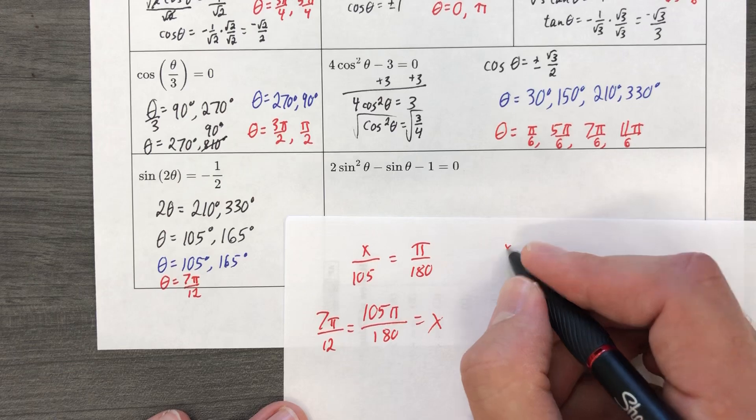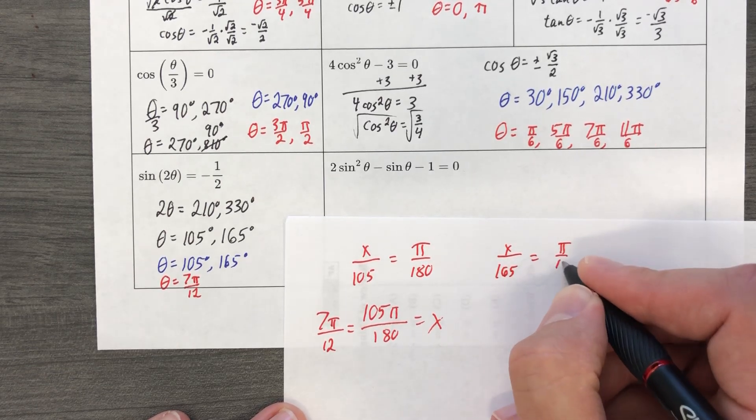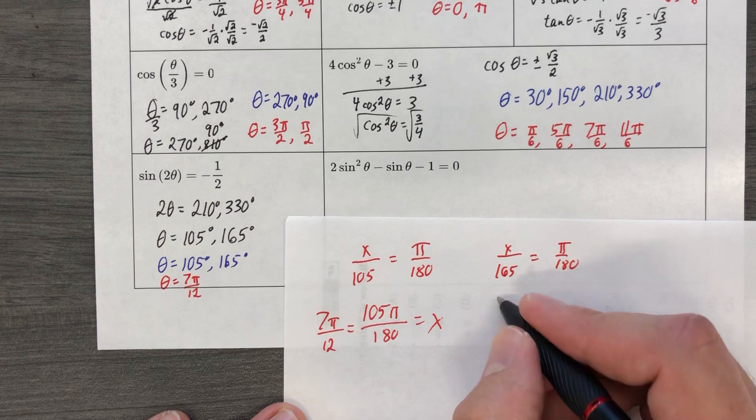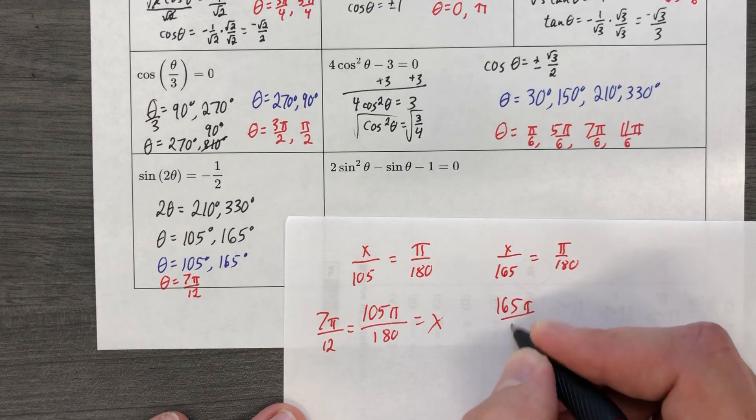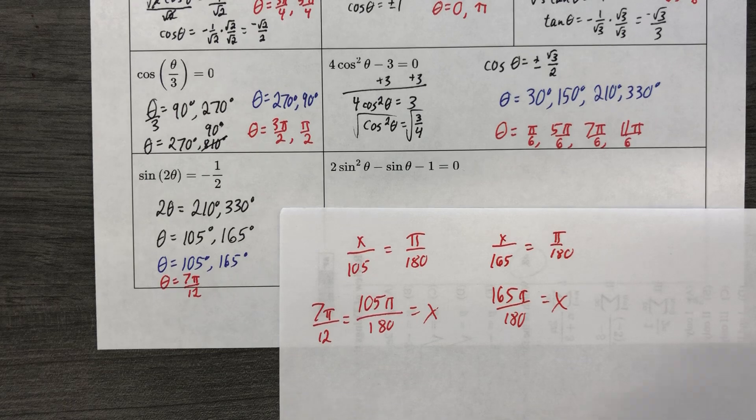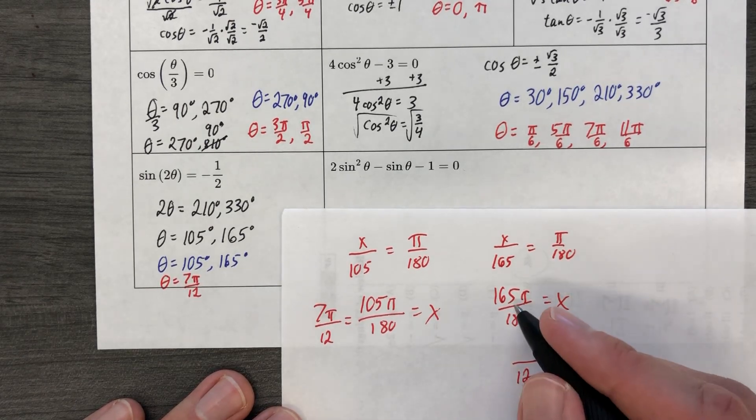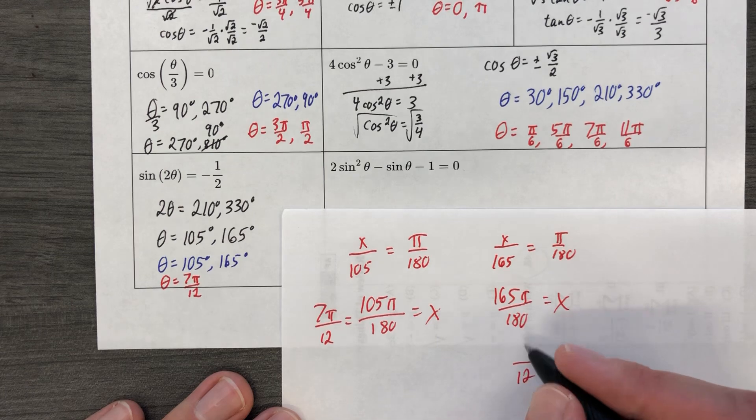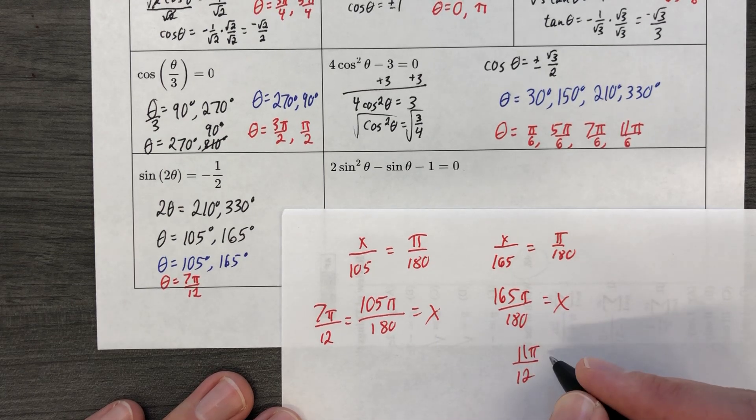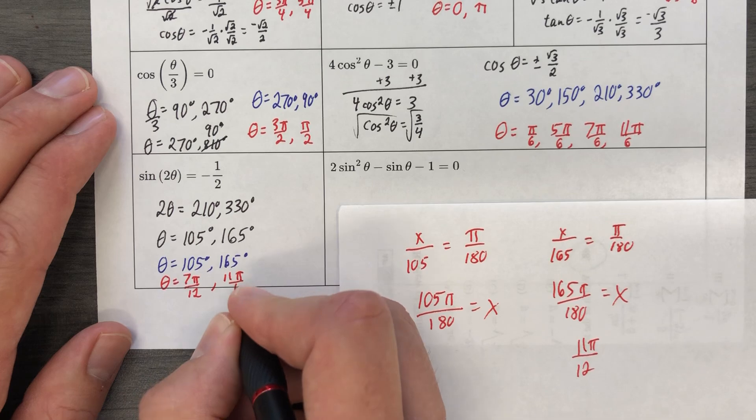All right, same situation here. X over 165 equals pi over 180, which do your cross multiplication. It's going to give you 165 pi over 180 and that's equal to the other x value. And let's see, 15 goes into that one 12 times. 15 is going to go into that one 11 times. So we have 11 pi over 12. 11 pi over 12.